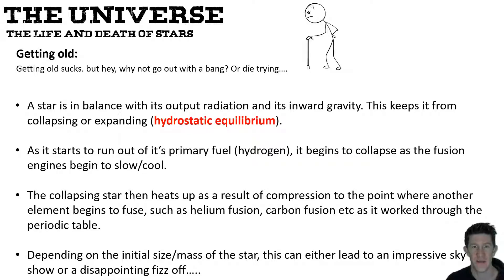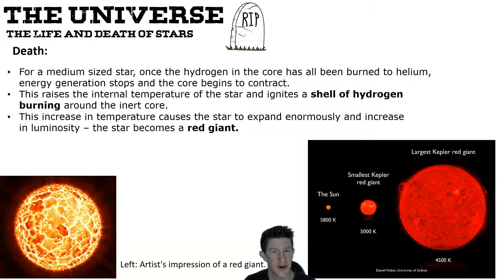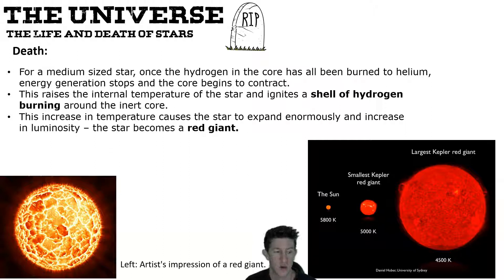How a star dies and the type of star it becomes is all based on how big it is — that affects how much it can compress and how hot it can get. For a medium-sized star — and our sun is a million times bigger than Earth and not even considered large — once hydrogen burns to helium the energy generation stops, the star begins to contract, and a shell of hydrogen flash-burns around it. This increases temperature enormously, and the star starts to expand — becoming a red giant. Our sun will become a red giant, though we have a very long time to worry about that.